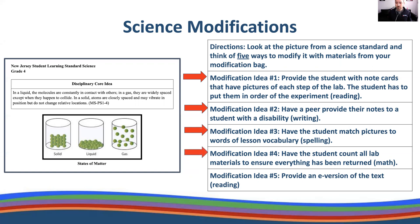Modification idea number four: have the student count all lab materials to ensure everything has been returned. They have a checklist — we need five microscopes, ten pairs of scissors, three Bunsen burners — so counting and using an inventory. Modification idea number five: provide an e-version of the text, just like the ELA example, with built-in accommodations from the e-version of the curriculum.